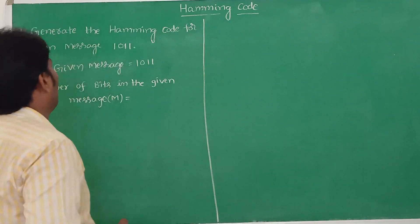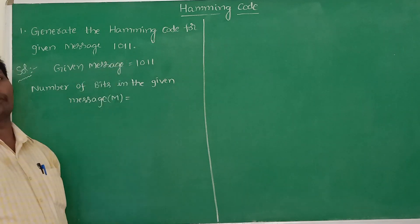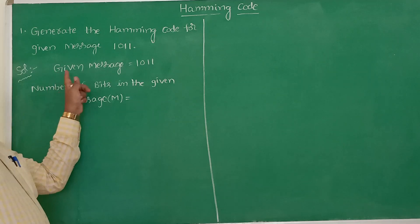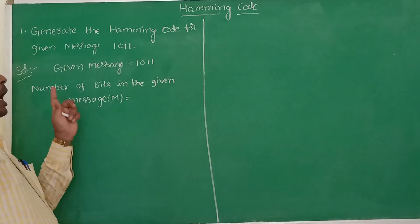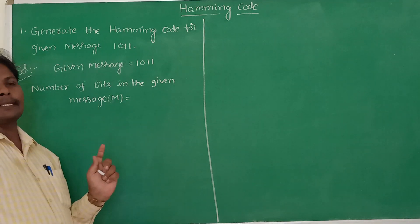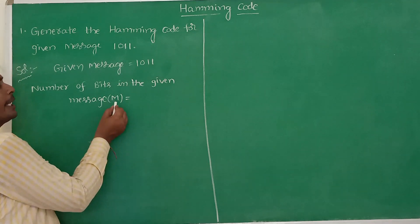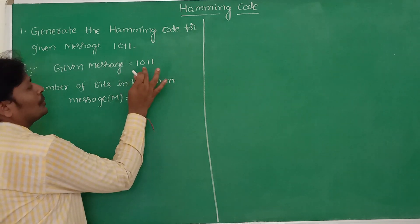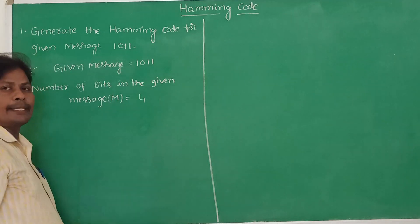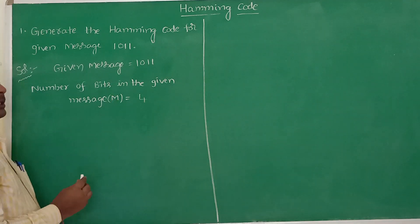Now, generate the Hamming Code for the given message 1011. The given message is 1011. How many number of bits are present in the given message? That is denoted by capital M. So that is equal to 4 — 1, 2, 3, 4. Therefore M is equal to 4.